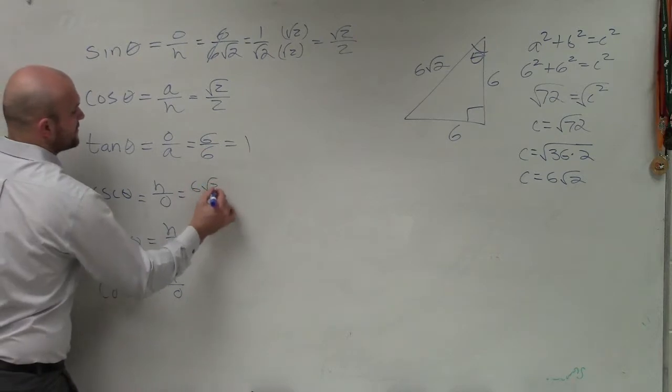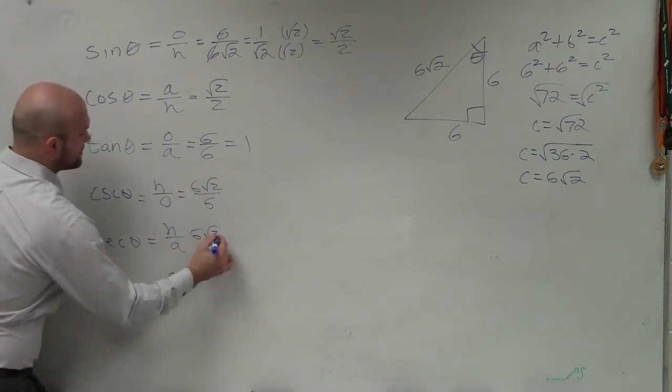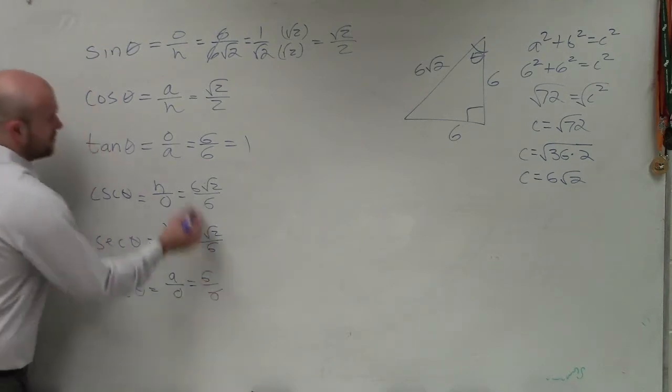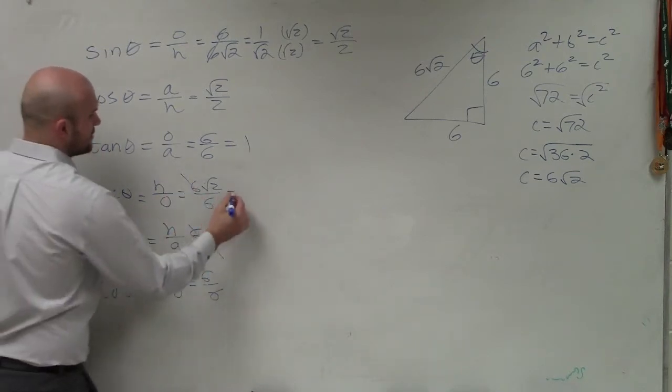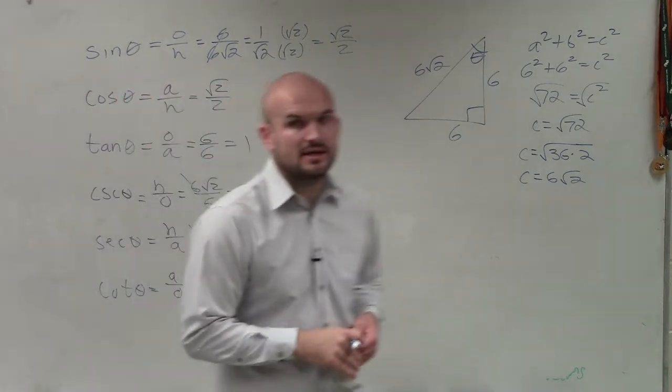Well, the hypotenuse is 6 square root of 2 over 6. Hypotenuse here is 6 square root of 2 over 6. And here, we just have 6 over 6. Well, these easily divide. And there's your final answer.